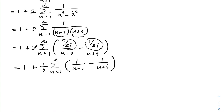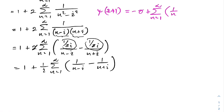Now, let us recall the digamma function. In previous videos, we discussed the digamma function and proved its series representation: psi of z plus 1 equals minus gamma plus the sum from n equals 1 to infinity of 1 over n minus 1 over n plus z.